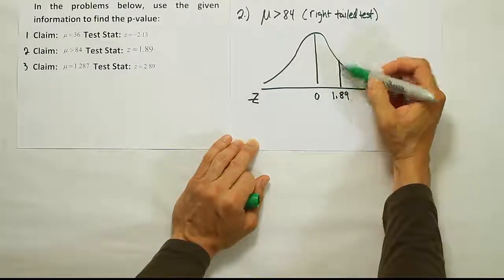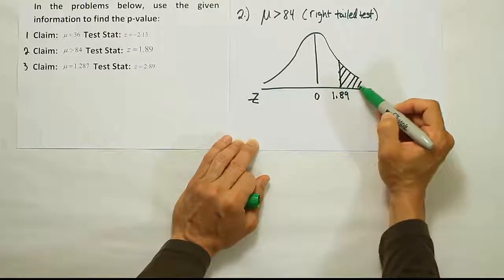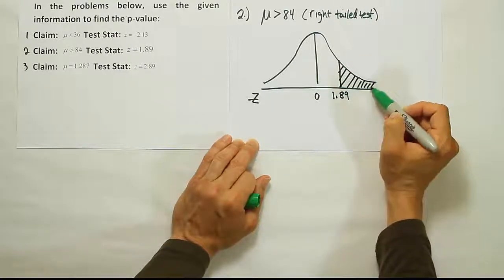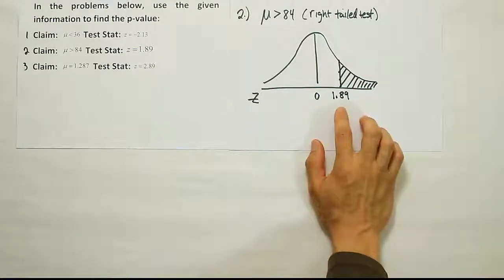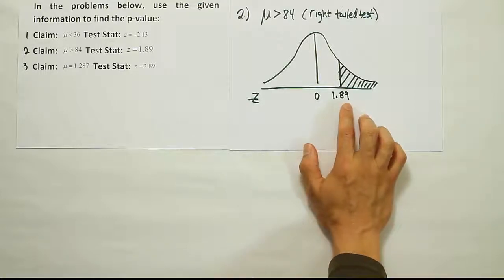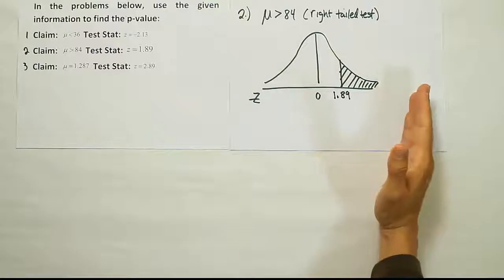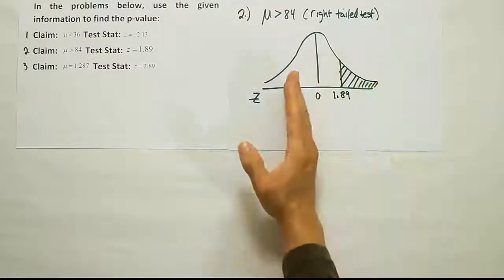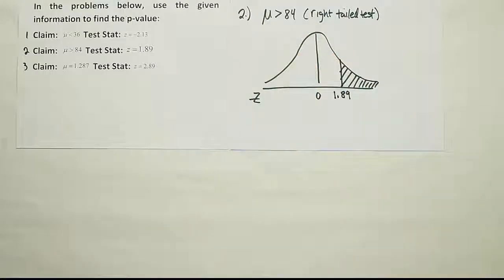Now, because it's a right-tailed test, we find the area to the right of the test statistic. Note, we are not finding the area to the right of the test statistic because the test statistic is on the right side. That is not what we're doing, right? It doesn't matter if the test stat is on the right or the left-hand side. If it's a right-tailed test, we always find the area to the right of the test statistic. So even if we had a test stat on this side, we still find the area to the right of it because it's a right-tailed test. All right, good.